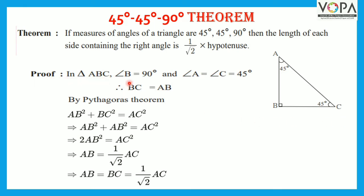Proof: In triangle ABC, angle B is equal to 90 degrees, and angle A and angle C is equal to 45 degrees.